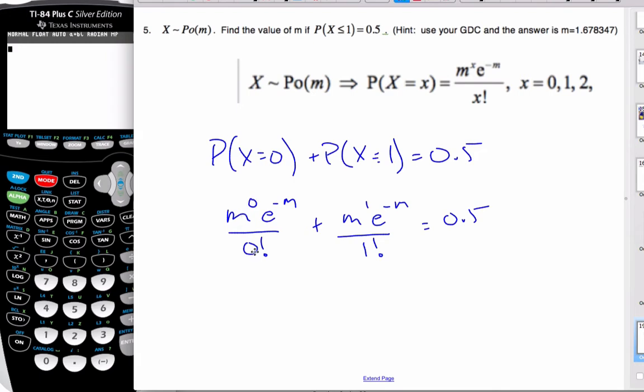Well, this is 1 and 1, so this is e to the minus m plus m e to the minus m equals 0.5. And so in order to solve this, the easiest thing to do is just to go to my calculator.